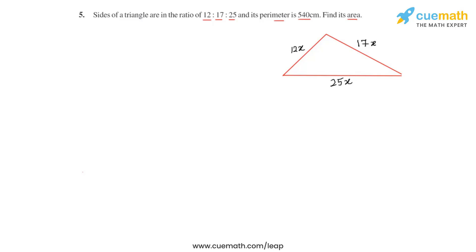The area of this triangle can be found by making use of Heron's formula but for that we need to know the value of x first and that can be found by making use of the information that the perimeter of this triangle equals 540 centimeters.